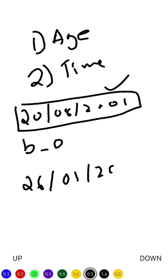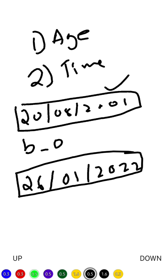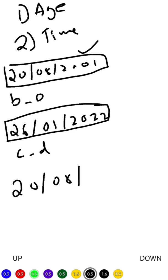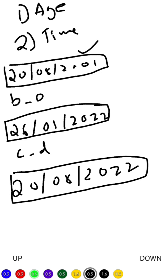The current date is 26/01/2022, and we'll save this in current_date, denoted as 'cd'. After these two, your upcoming birthday will be in 2022, with the same day and month — so it's 20/08/2022. This is the new birthday, denoted as 'bm'.